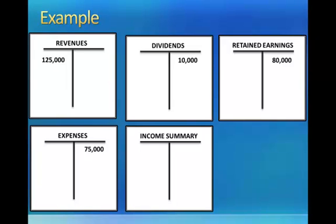Next, we close the income summary and dividend accounts to retained earnings. That will wrap up the closing entries that are required. The accounts that are involved are revenue, expense, dividends, income summary, and retained earnings. You may have multiple revenue accounts and multiple expense accounts, but they'll all work the same way. The dividend account represents the dividends that have been declared during the accounting period. The income summary account is new — it will have a zero balance when we start, and it will have a zero balance when we end.